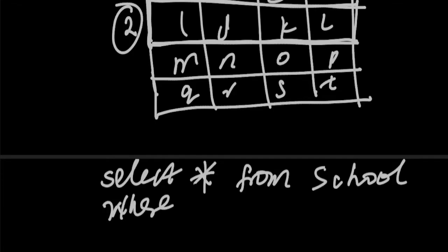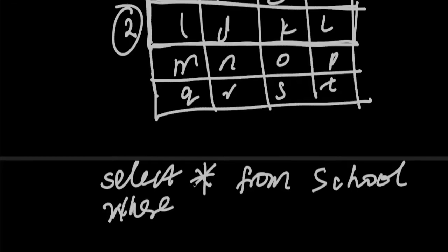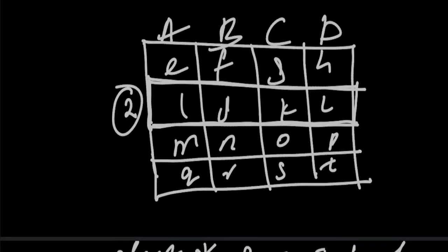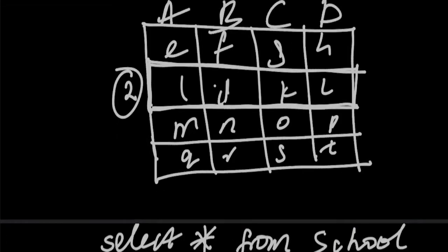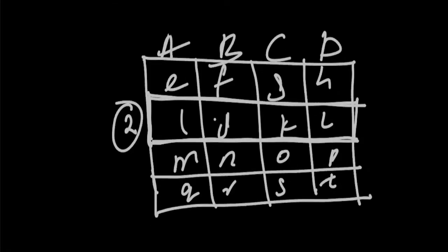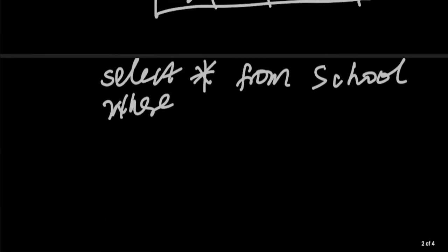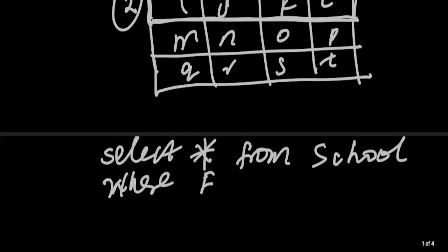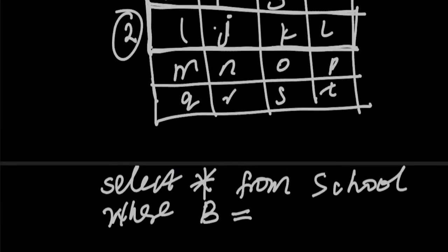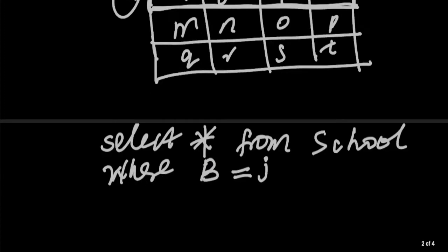I want to visit this row. I must pass through a column. If I want to select row 2, I must pass through either this, or this, or this. Just choose anyone. Assume I want to go through B. I will tell the system WHERE column B is equal to J.